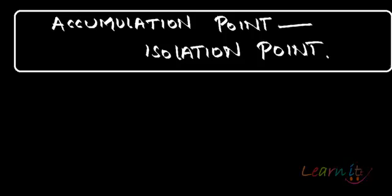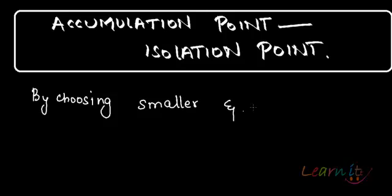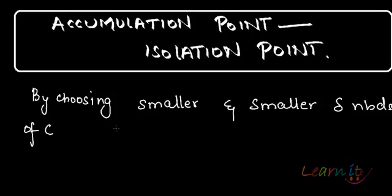Now we call it an accumulation point because by choosing smaller and smaller delta neighborhoods of c, we can obtain a lot of points.